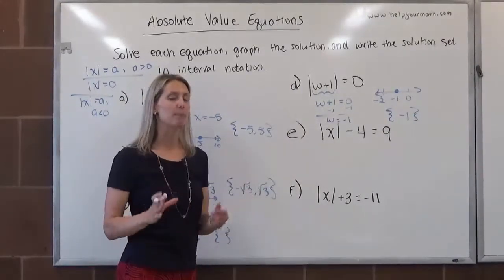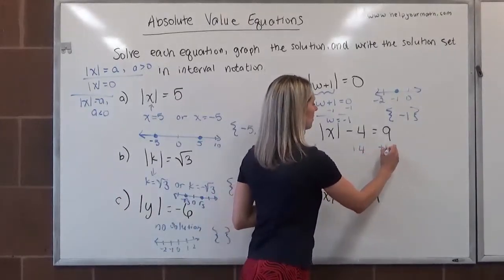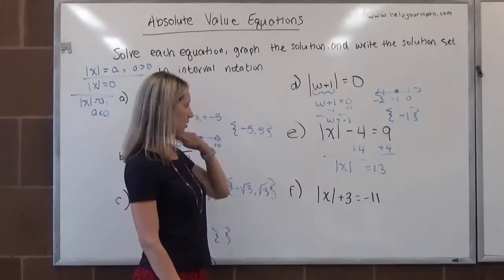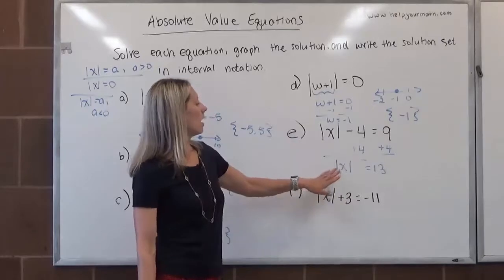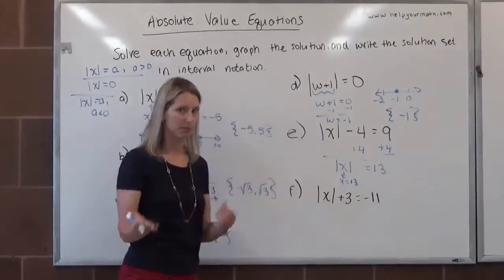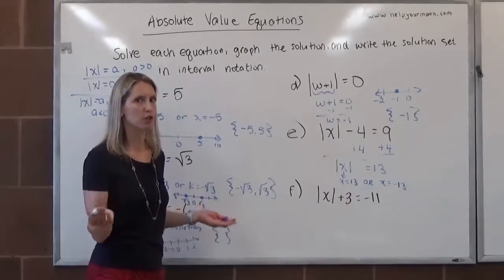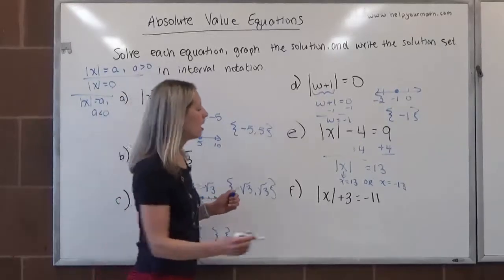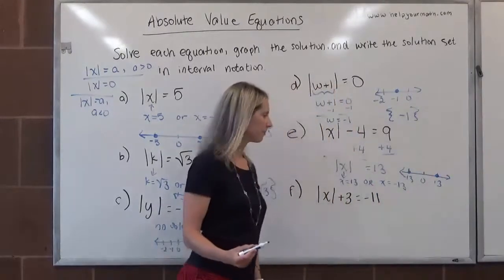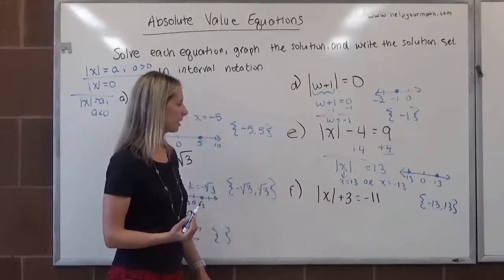For letter E, we do have a little bit of work. The absolute value is not by itself — it's being subtracted by 4. So we add 4 to both sides, and now we have the absolute value of x is equal to 13. Since it's equal to something positive, there are two cases to consider: x equals 13, because the absolute value of 13 is 13, or x equals negative 13. Those are the two solutions. On a number line, we put a dot over negative 13 and a dot over 13. In interval notation, we write negative 13 first, then positive 13.